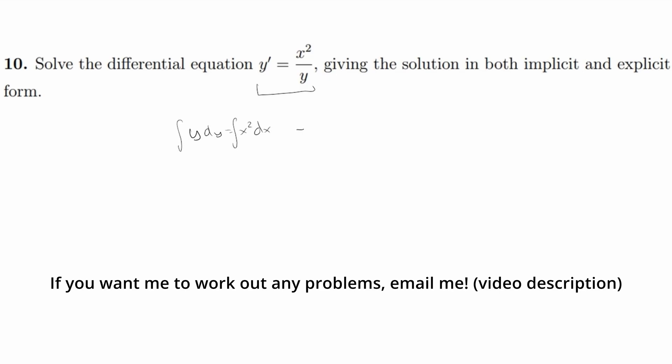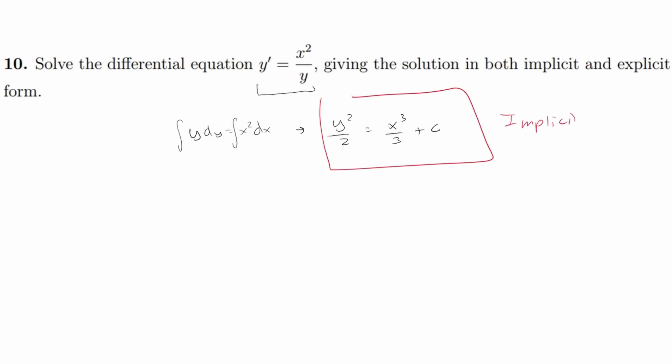If we then integrate both sides we are going to get y squared over 2 equals x cubed over 3 plus c. And this right here is enough to call it a day for our implicit form, but not enough for our explicit.